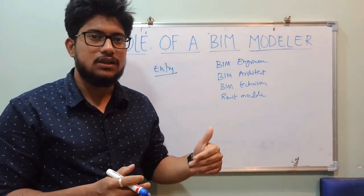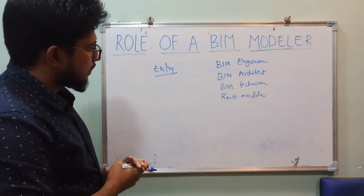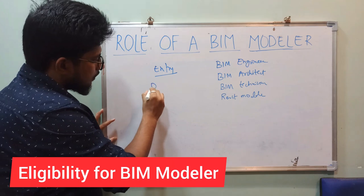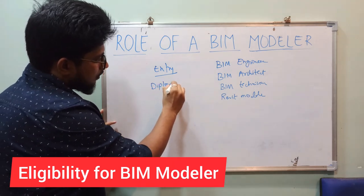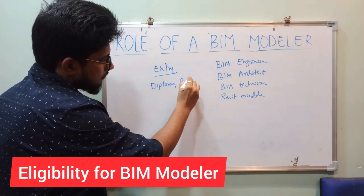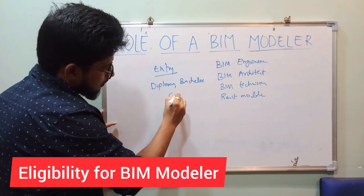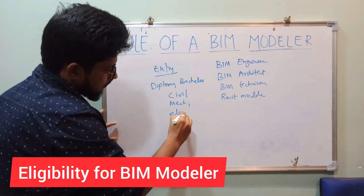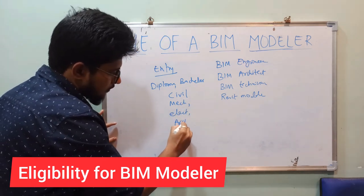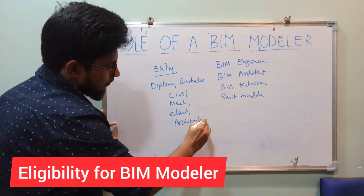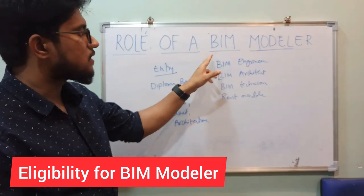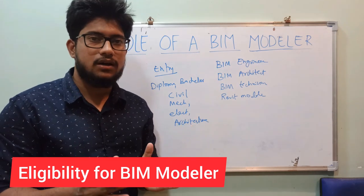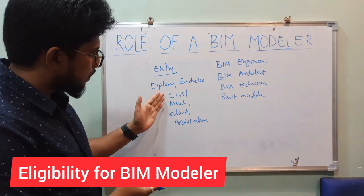Any candidate who has a diploma or bachelor's degree in civil, mechanical, electrical, or architecture can become a BIM modeler — meaning they can become a BIM engineer, BIM architect, BIM technician, or Revit modeler.